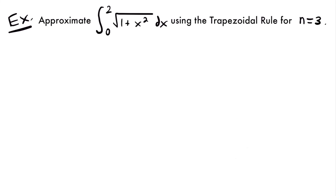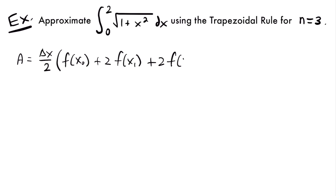Let's look at one more example. For our last example, we want to approximate the integral from 0 to 2 of the square root of 1 plus x squared dx using the trapezoidal rule for n equals 3. We're using three trapezoids to approximate the area. Using the trapezoidal rule, the area equals delta x divided by 2 times f of x sub 0, plus 2 times f of x sub 1, plus 2 times f of x sub 2, plus f of x sub 3. The first and last terms are multiplied by 1, and the middle terms by 2.